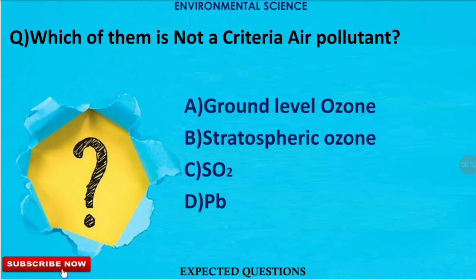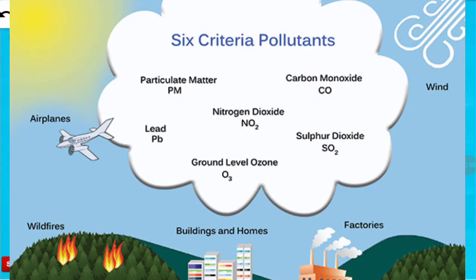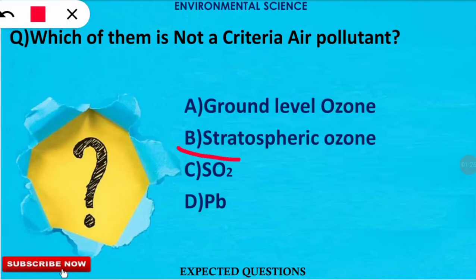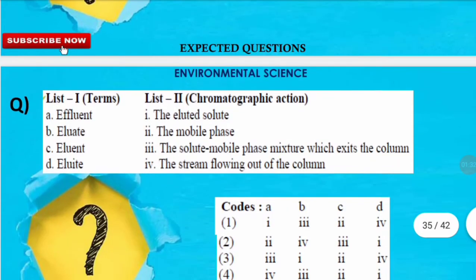Our first question is: which of them is not a criteria air pollutant? The correct option is option B. Criteria air pollutants are those which have been regulated and are used as indicators of general air quality. The six criteria air pollutants are: lead, ground-level ozone, sulfur dioxide, carbon monoxide, nitrogen dioxide, and particulate matter. Stratospheric ozone is not a criteria air pollutant.